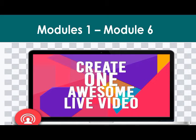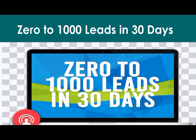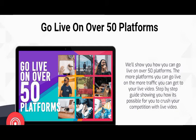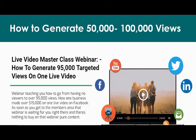We teach you ways to get rid of the fear that's holding you back from sharing your unique message. The 'Zero to a Thousand Leads in 30 Days' module focuses entirely on getting a thousand people — imagine getting 500 to 1,000 people to your live event; that's possible today. The 'Go Live on Over 50 Platforms' module shows you a step-by-step guide on how to crush your competition and generate anything from 50,000 to 100,000 views. You'll never have to worry about traffic to your live video event again.